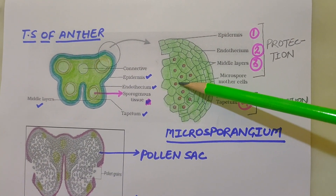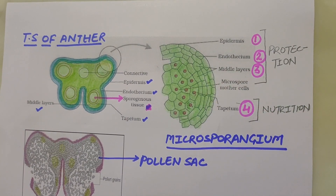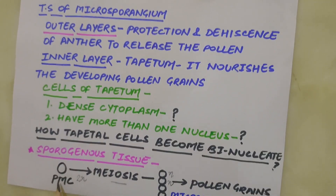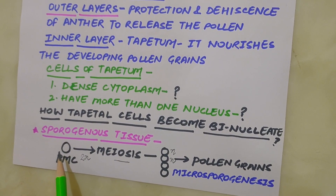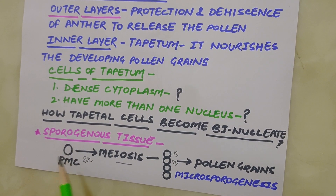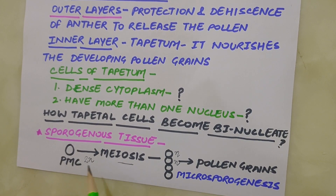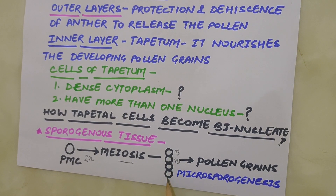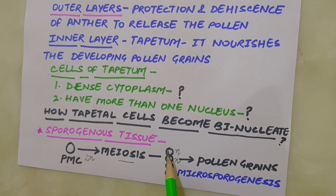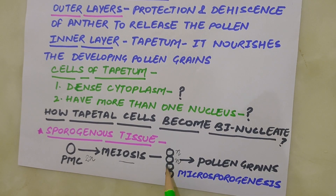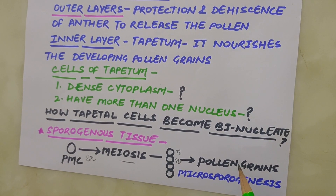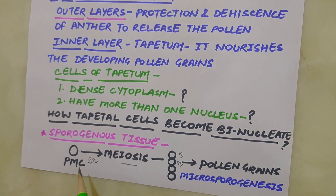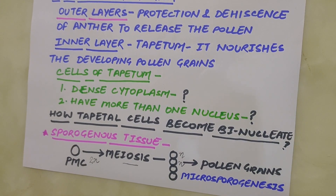Each cell of sporogenous tissue is capable of giving rise to a microspore tetrad. Each pollen mother cell of the sporogenous tissue is capable of producing new pollen grains. These cells undergo meiotic division to form microspore tetrads. As the anther matures and dehydrates, the microspores from the tetrad dissociate from each other and develop into pollen grains. The process of formation of microspores from pollen mother cells through meiosis is called microsporogenesis.